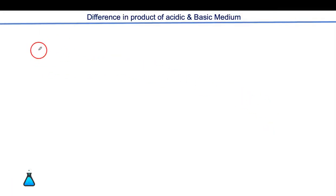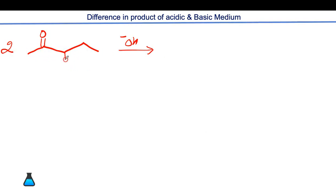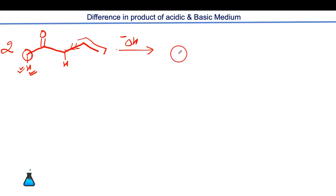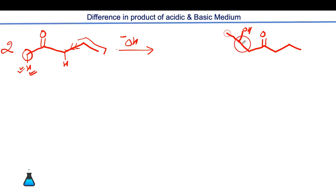Let's examine the basic difference between acid- and base-catalyzed mechanisms using an asymmetric carbonyl compound. In basic medium (OH⁻), the less hindered alpha hydrogen is removed — if you remove this hydrogen, you get a negative charge at that carbon, and the alkyl group shows a +I effect, making that hydrogen more acidic. So OH⁻ removes this hydrogen, generating the nucleophile at the less sterically hindered carbon, which then attacks the second carbonyl compound.